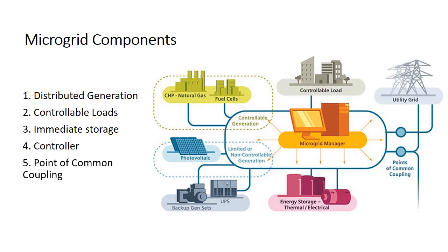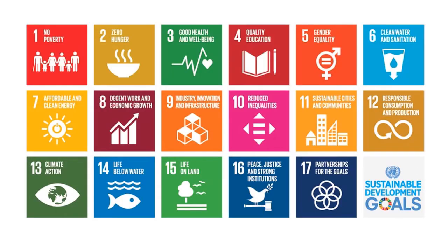We can see all these components in this diagram — the utility is connected by means of a point of common coupling to controllable load, generation, energy storage, and a microgrid manager that manages all these things. I request everyone to read these 17 sustainable development goals.